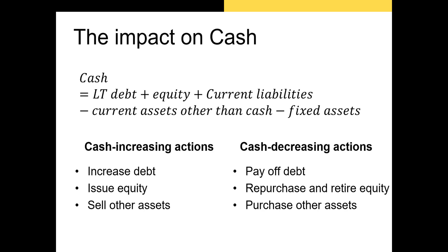Because we're discussing short-term financing, which involves a firm raising cash, let's talk about the relationship that other line items have on the cash position of a firm. Cash can be calculated using the formula: cash equals whatever you've borrowed — long-term debt, cash raised via equity, and any current liabilities. All of those raise cash for you. Then if you're using that cash for other current assets like inventory or to buy a production facility or land, that takes cash away from your cash item on the balance sheet.